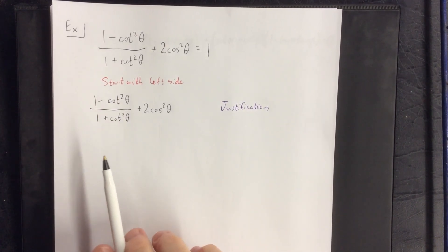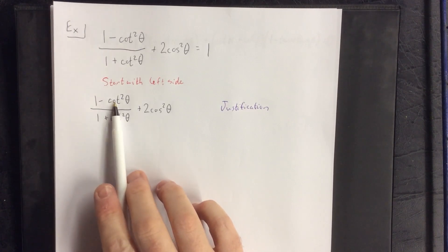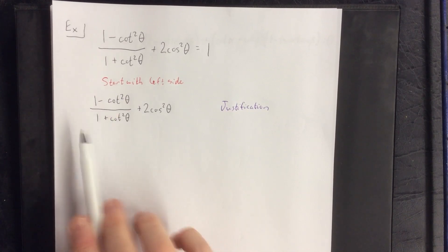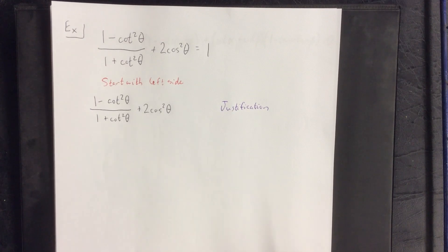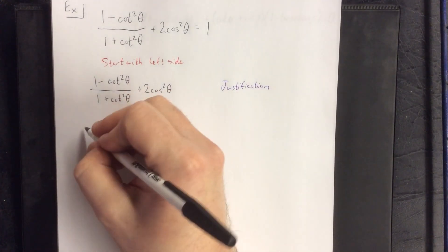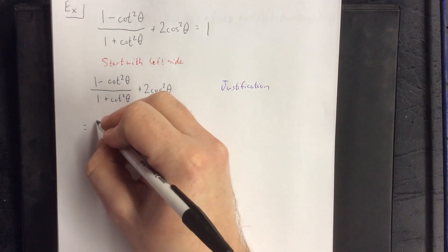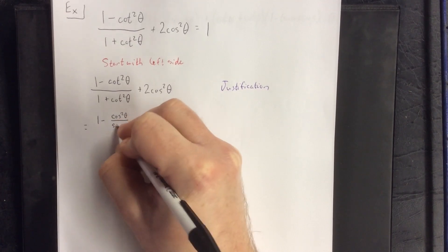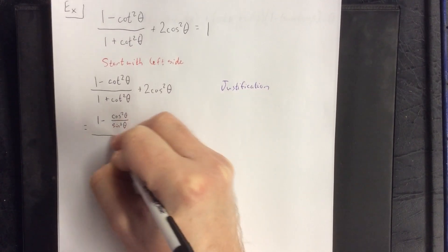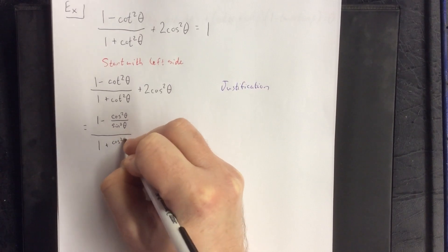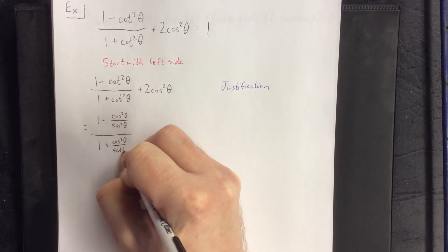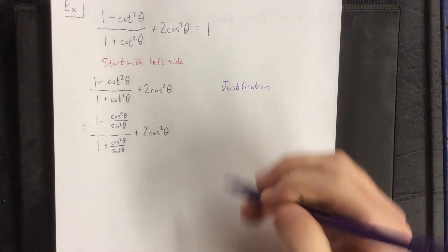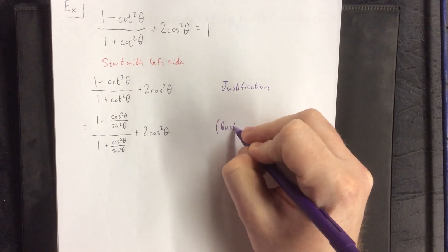Already I see several things I could do with this fraction. We could use quotient identities to turn cotangent squared into cosine squared of theta over sine squared of theta, or try applying Pythagorean identities. The number one recommendation is to put everything in terms of sine and cosine. So cotangent squared becomes cosine squared of theta over sine squared of theta in both the numerator and denominator. The justification: I used quotient identities to make that work.